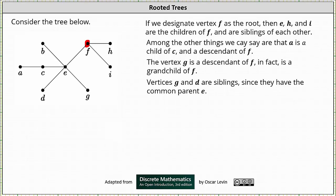Vertices G and D are siblings since they have the common parent E. Notice vertices G and D have the same parent E, which indicates they are siblings.